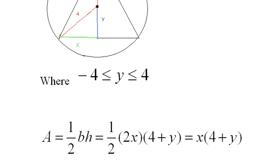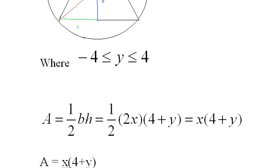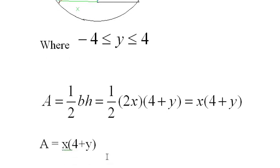We know the area of a triangle is one-half the base times the height. The base is 2x and the height is y plus four, taking advantage of that radius. I also drew a radius here so I can make a small right triangle and relate x and y.